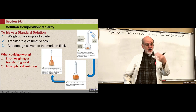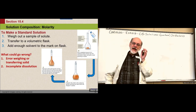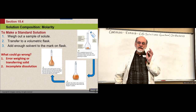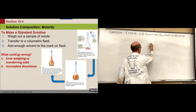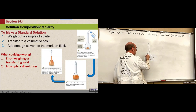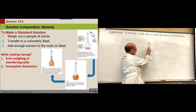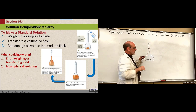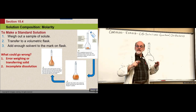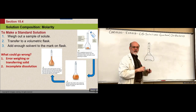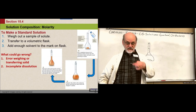Another possibility: you miscalculated and the solution you want exceeds the solubility of the solute — in which case, all of the solute does not go into solution. Another possibility for incomplete dissolution is that you don't wait. The ideal is: with your flask, you have your solid in the bottom, you add a certain amount of water, and you mix it until it's completely dissolved. Once dissolved, then you add water to bring it to the mark. That guarantees the solute has been dissolved.